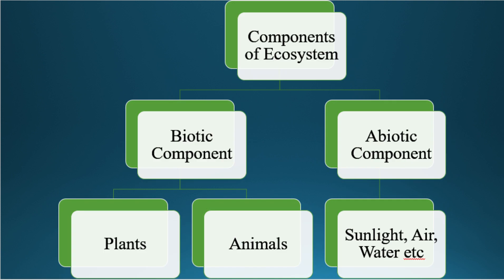All ecosystems are comprised of two components. One is called the biotic component and the second one is the abiotic component. Biotic components include plants and animals, while the abiotic components include sunlight, water, air, soil, climate, temperature, and moisture. All these things are part of abiotic components. Let's see these one by one.